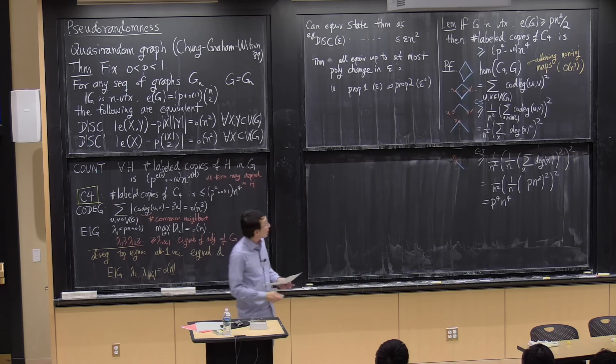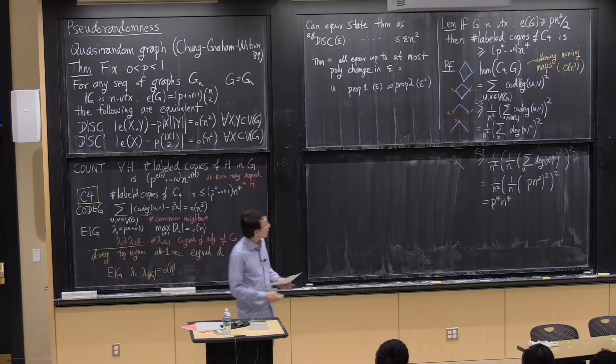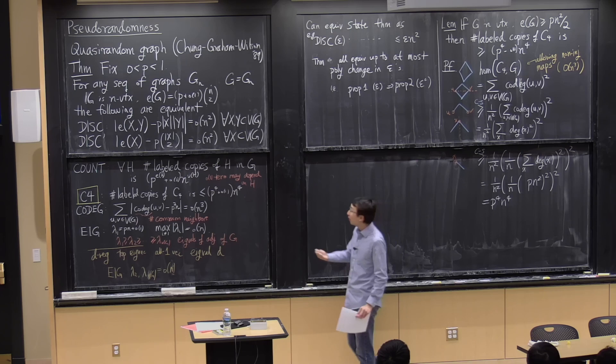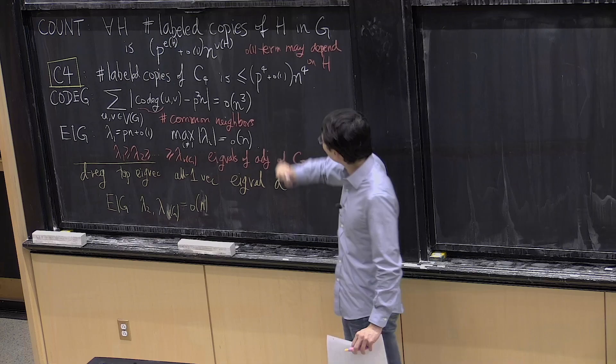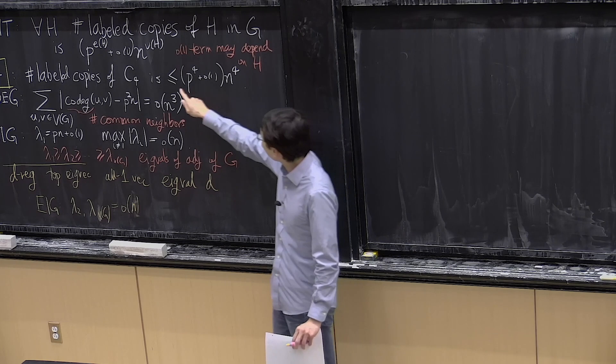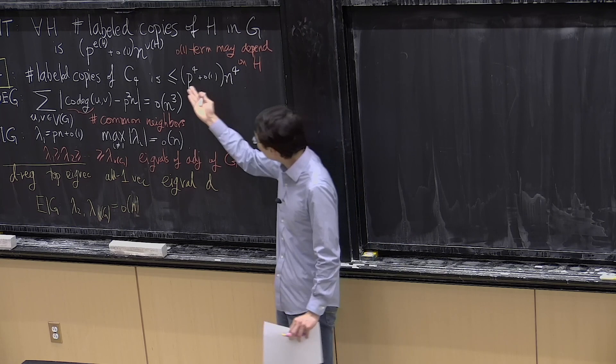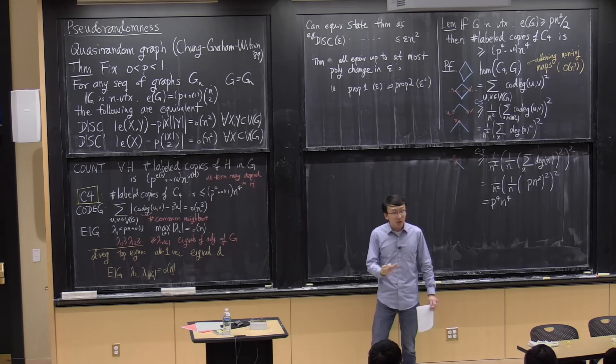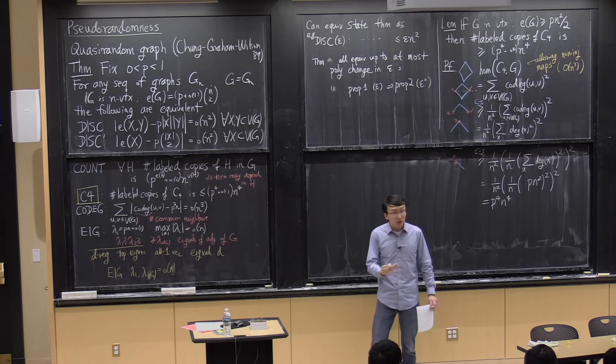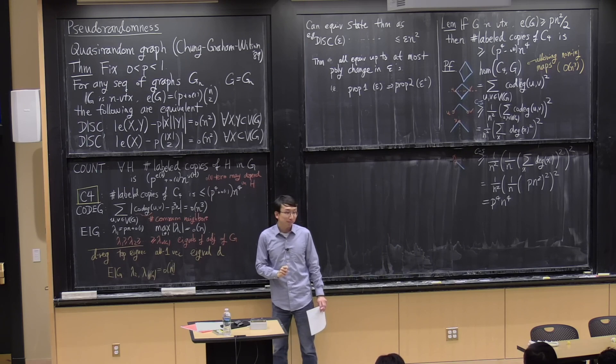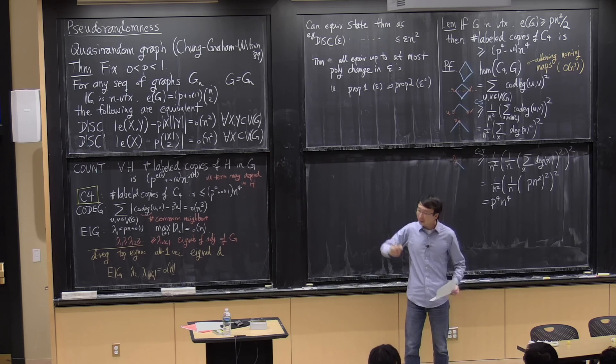What this calculation tells us is that if you have edge density P, then you necessarily have C4 density at least P⁴. That partly explains why we have 'at most' in the C4 condition — you always know it is at least this quantity. So the C4 quasi-randomness condition is really equivalent to replacing the 'less than or equal to' by an 'equal sign.'